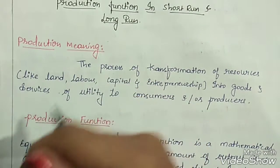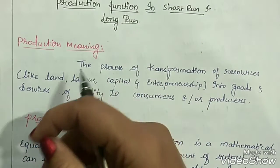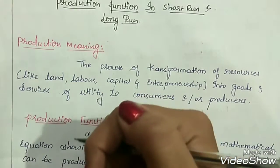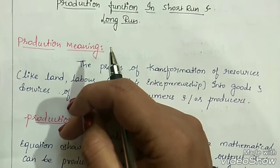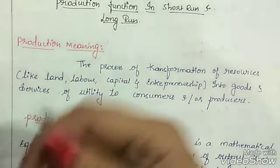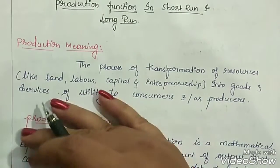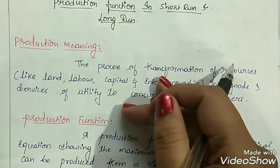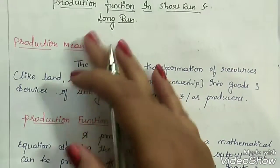Let's take an example of paddy. We cultivate paddy, but can we consume paddy directly? No. It needs further processing, further production, then it will be converted into rice which we can easily consume. So production is nothing but using all the factors like land, labor, capital and entrepreneurship and converting raw materials into finished goods.